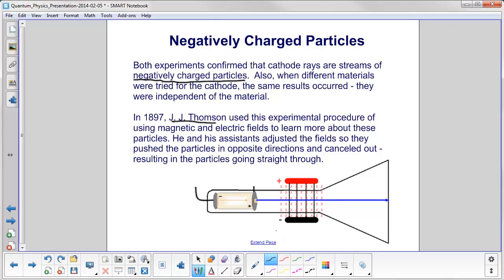He and his assistants would adjust the field so that they push the particles in opposite directions. For example, the electric field here would be pushing the negative particles up, and you could have the magnetic field pushing them down.